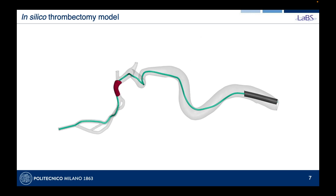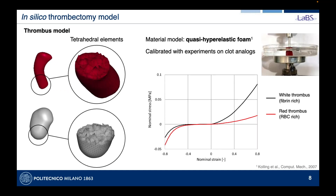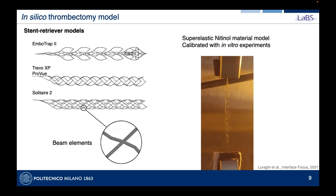We modeled the thrombus based on pictures showing its length and position. The thrombus was discretized with solid elements and a quasi-hyperelastic foam formulation available in LS-DYNA. Material properties were calibrated from in vitro experiments on clot analogs — unconfined compression and tensile tests. White fibrin thrombi are stiffer than red ones, and this information was integrated into our model. For the stent retrievers, finite element models were discretized with beam elements, and the nitinol material properties were calibrated with uniaxial tensile tests on the real devices.